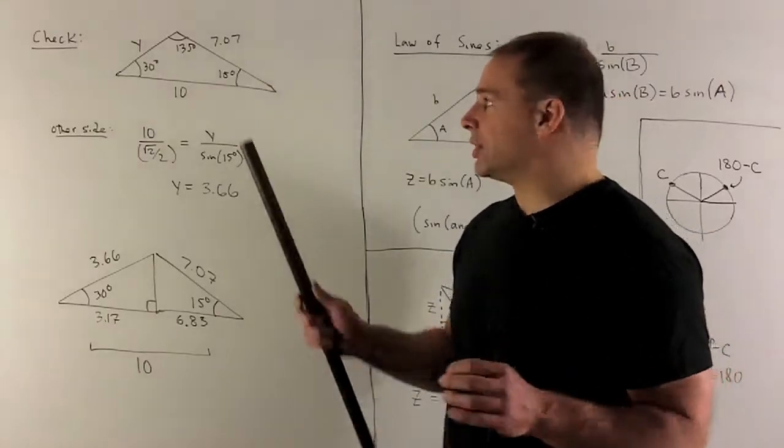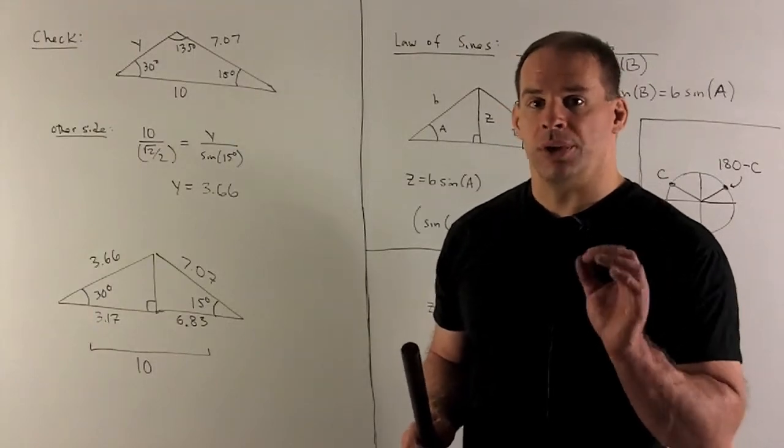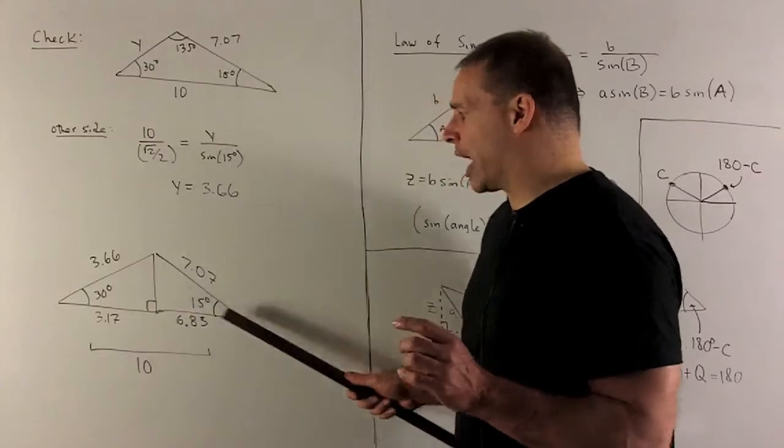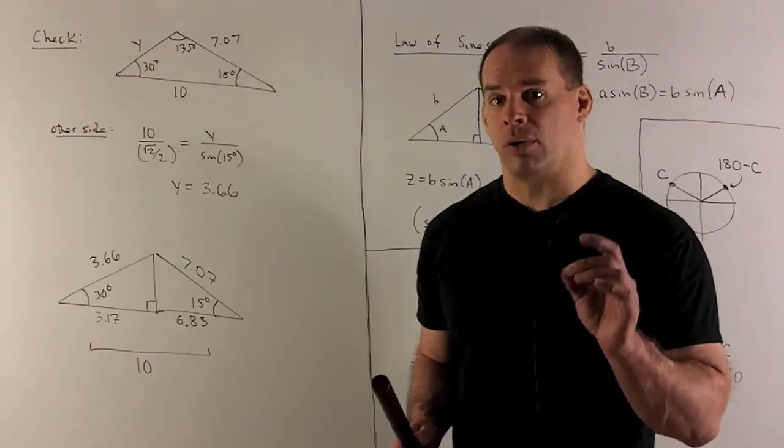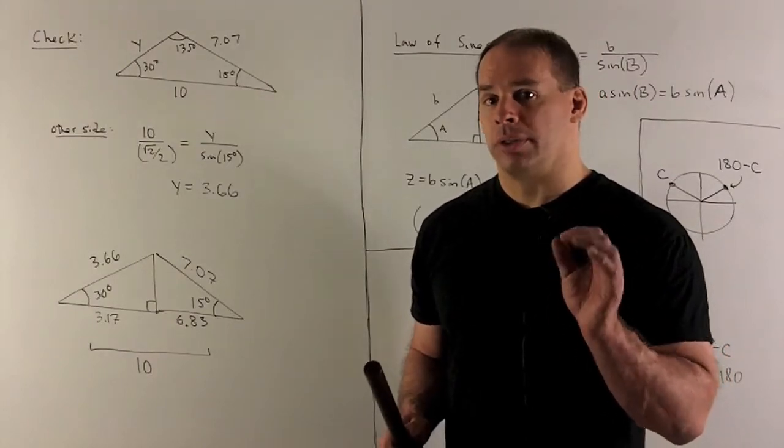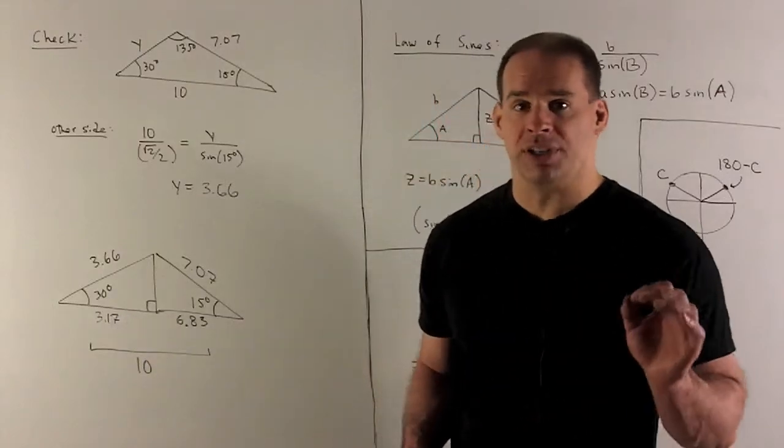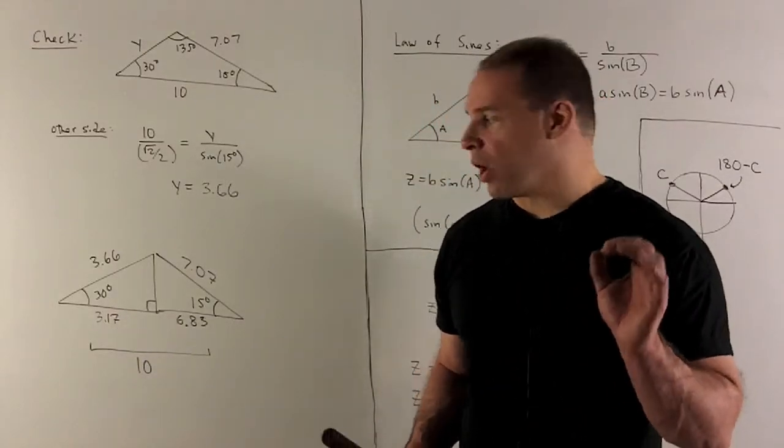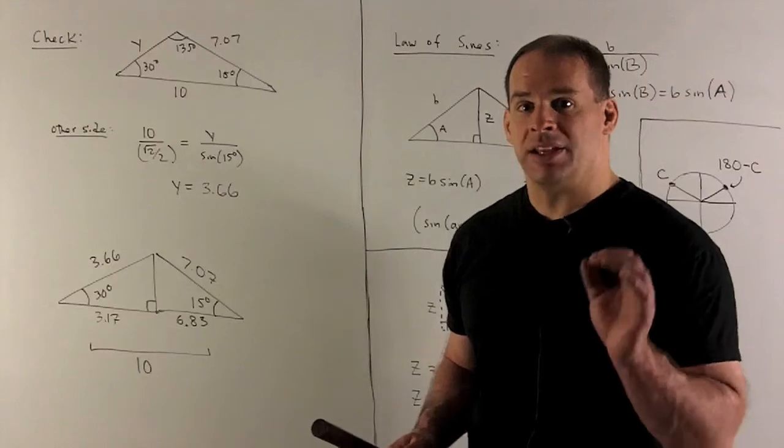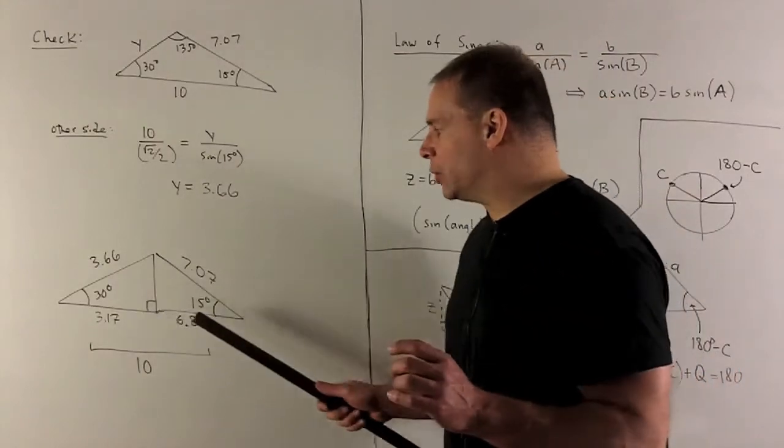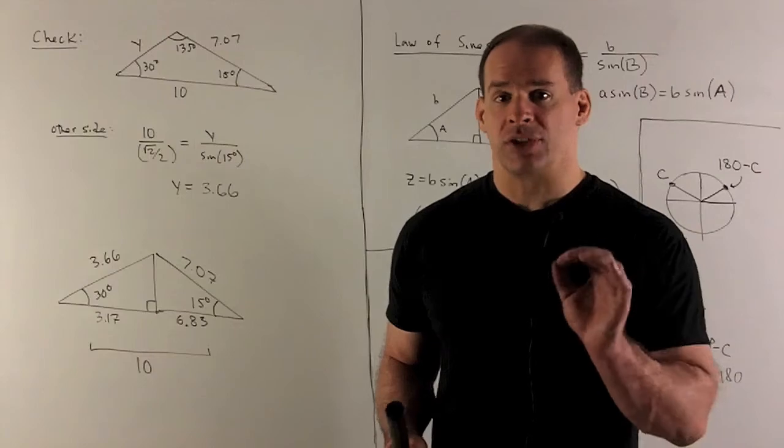We'll put that in for this side here. Next, we're going to take the top vertex and draw in the line segment that goes perpendicular to the base. It gives me two right triangles. We'll use the identity that the cosine of an angle equals the adjacent over hypotenuse. For the triangle on the left, our angle is 30 degrees, hypotenuse is 3.66, so adjacent is 3.17. For the triangle on the right, angle is 15 degrees, hypotenuse is 7.07, adjacent is 6.83. When we add these two bases together, we get 10, and that matches what we had originally for our base.